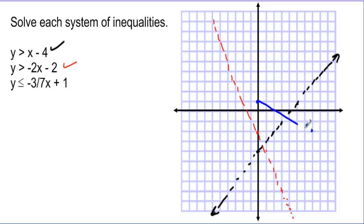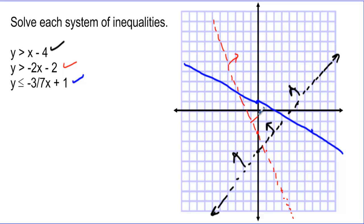Here's our last line. We want above the first line, above the second line, and below the third line. Above the first: here, here, and here. Above the second: here and there. Below the last line — which is in this area right here. So we need to shade inside this little triangle. All of those points will solve the system.